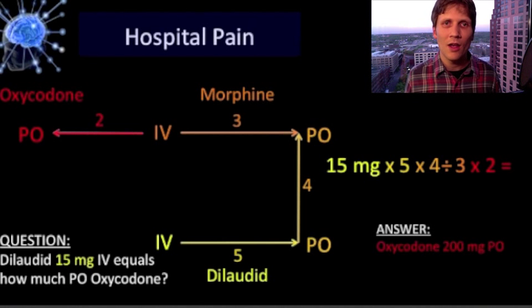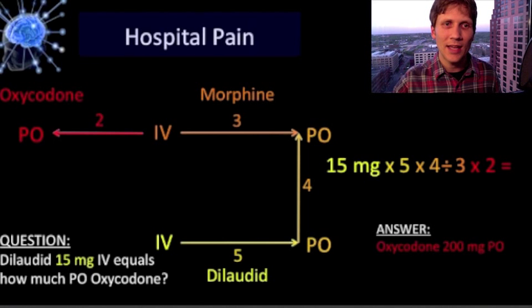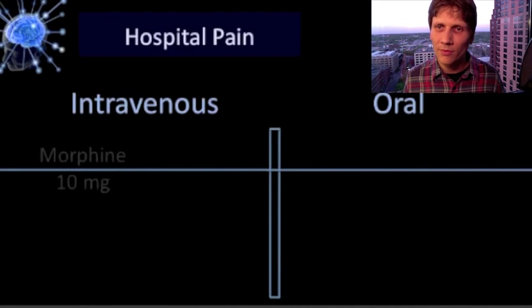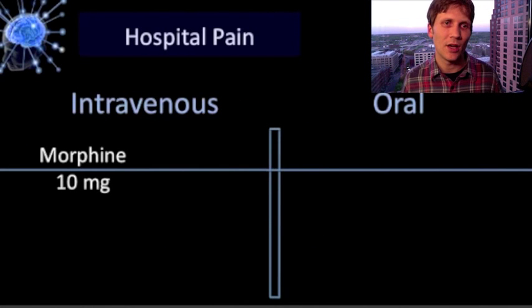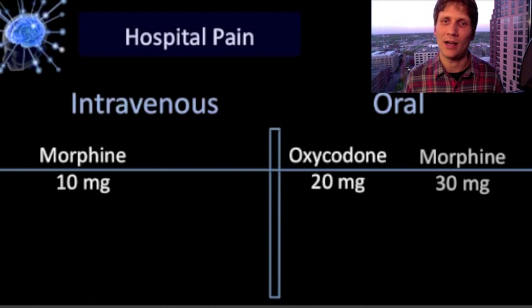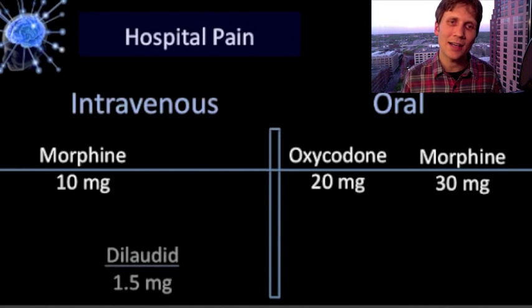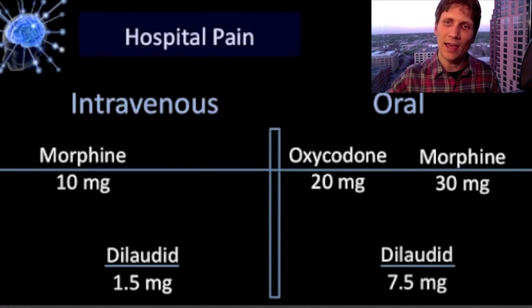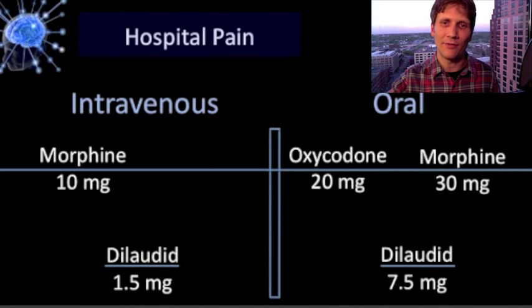These conversion rates are pretty standard and based on this reference table: 10 milligrams of IV morphine equals 20 milligrams of oxycodone equals 30 milligrams of oral morphine. Also worth knowing: oxycodone only comes in oral form, whereas morphine comes in IV and oral, and dilaudid comes in IV and oral.